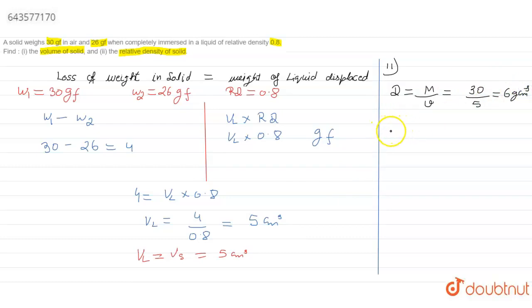Now relative density of any material is equal to the absolute density of that material divided by the density of water. That is equal to 6 upon the density of water is 1 gram per centimeter cube. So relative density of solid turns out to be 6. As the relative density is a unitless quantity, so it does not have any units.